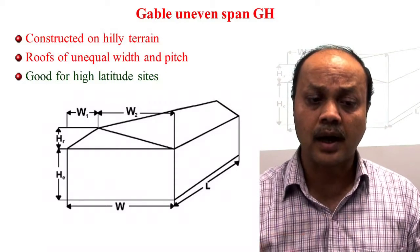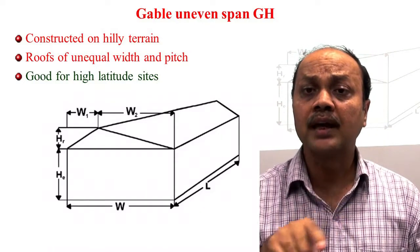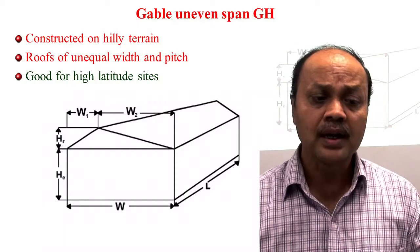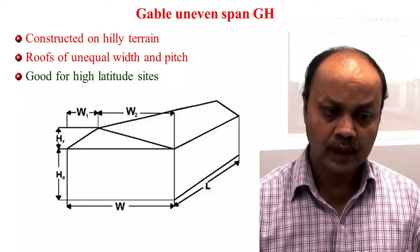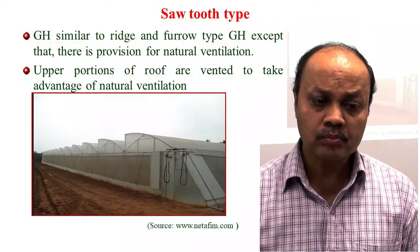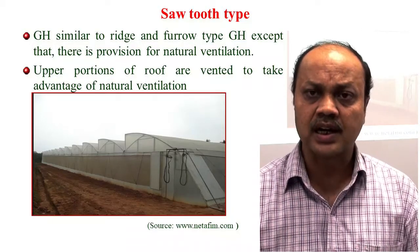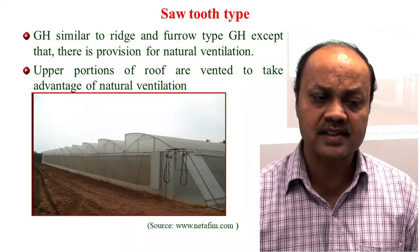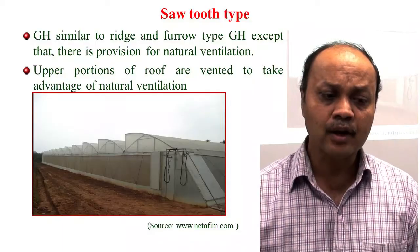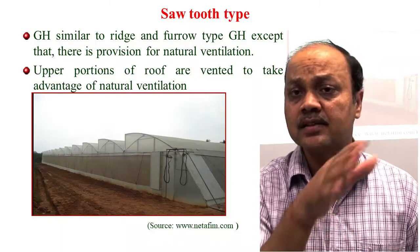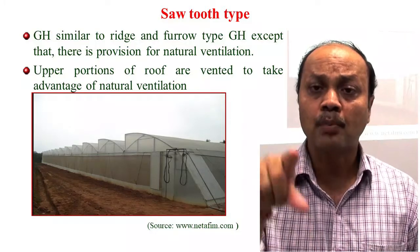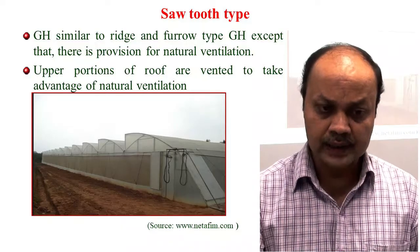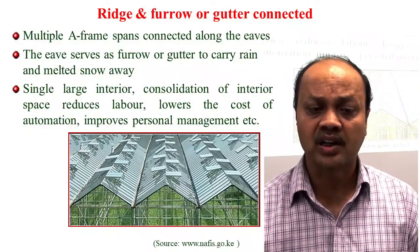In the uneven-span greenhouse, the widths W1 and W2 are not equal, and the pitch angles theta-1 and theta-2 are also not equal. This type is normally used in hilly terrain. The sawtooth-type greenhouse is similar to the Quonset type except it has a provision for natural ventilation — the upper portion of the roof is vented so that hot air escapes through natural ventilation.